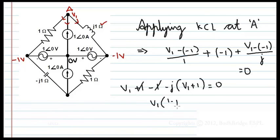V1 into 1 minus j is equal to j. Therefore, V1 equals j by 1 minus j.